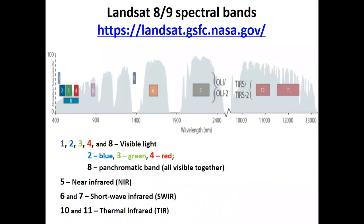If you look carefully at the part of the electromagnetic spectrum including visible light and infrared light — this picture is taken from the NASA website — all the grey peaks show us those parts of the spectrum that go through the atmosphere. Our atmosphere is not transparent for some wavelengths, so satellites can only detect light that travels from the sun to the surface, reflects, and travels back to be detected by satellite sensors.